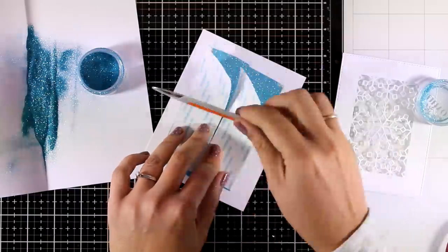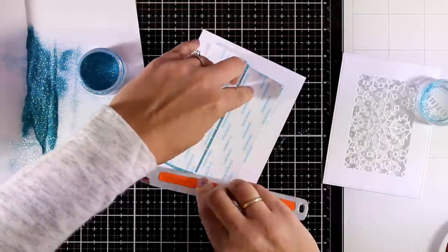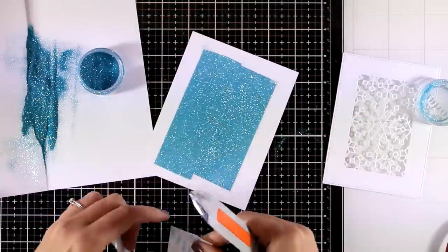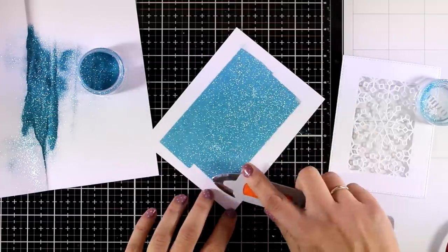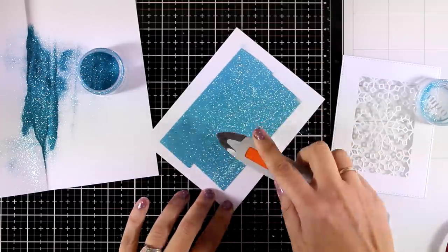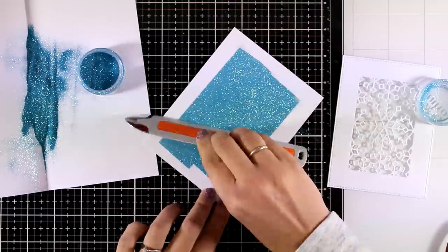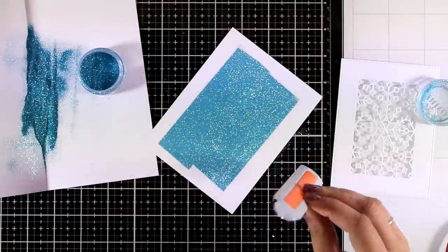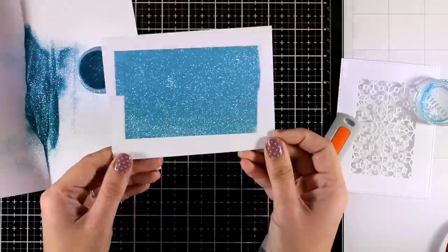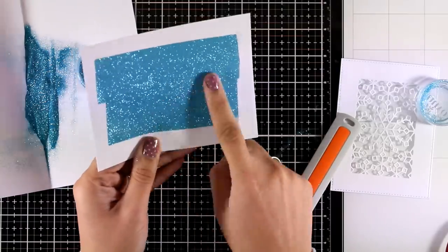Now if you go over it with your bone folder it is going to make sure that everything is nicely stuck there. Just tap off the excess and you can also go directly with your bone folder, this is going to make it look even more shiny. I am going to tap off the excess and now the glitter is nicely stuck there.